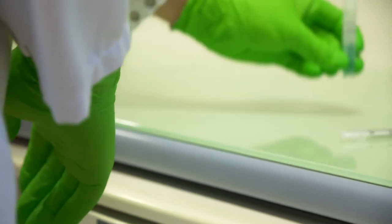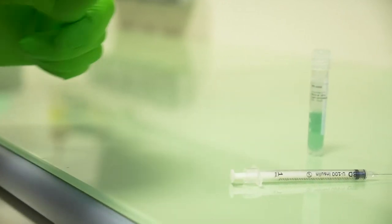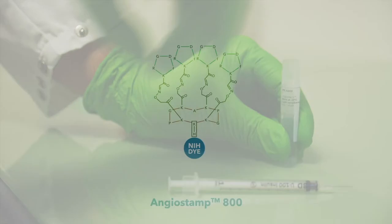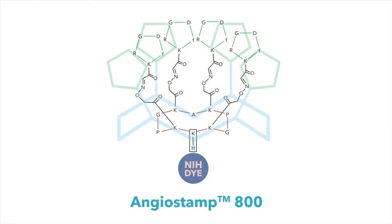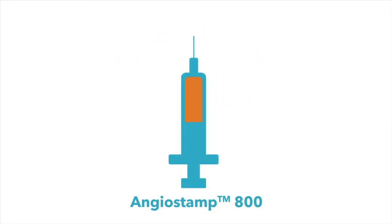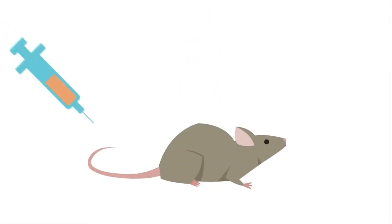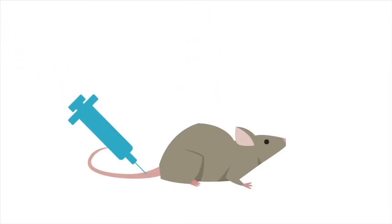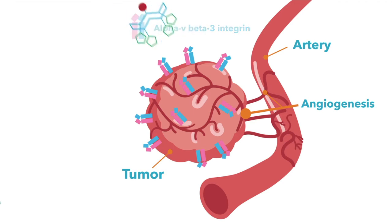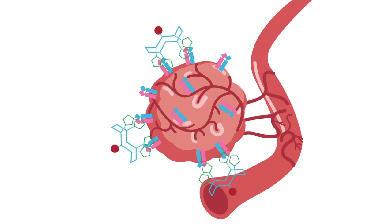With contrast agents like Angiostamp 800, you can take this one step further — in this case, for oncology. Angiostamp 800 targets tumors via specific recognition of alpha-v-beta-3 integrin, a cell surface receptor involved in cell adhesion and migration. This integrin is overexpressed in endothelial cells during neoangiogenesis, as well as in many tumor cell types.